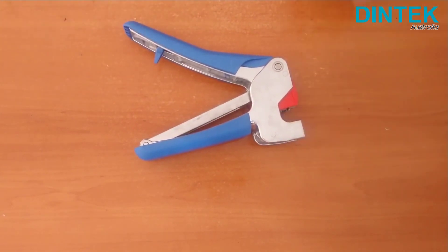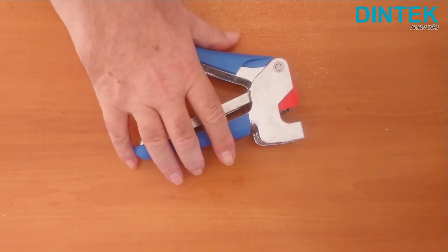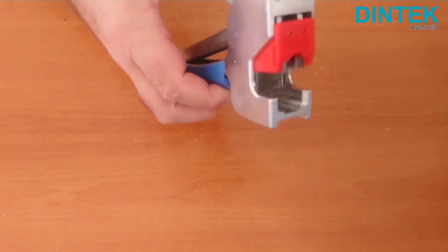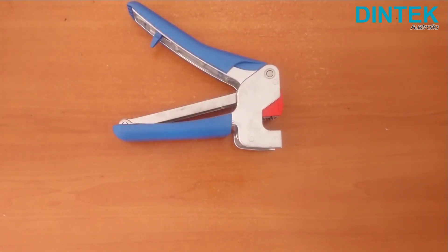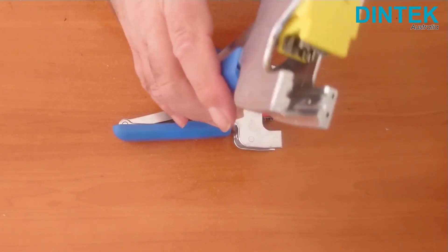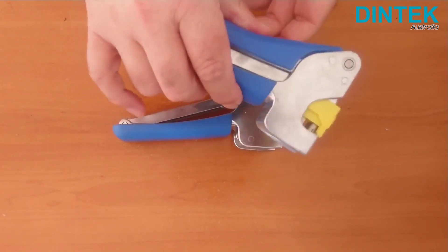Today I'm demonstrating the Dintek EasyTool 90, which is a very clever tool designed to terminate and trim all four UTP pairs at once in a horizontal easy jack. There's also the EasyTool 180 available for terminating vertical easy jacks in the same manner.